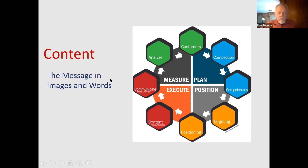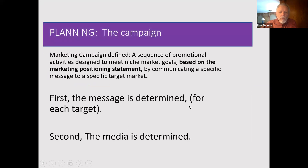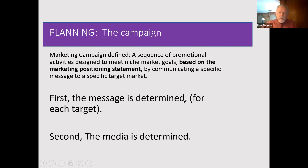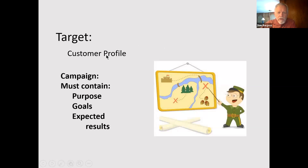Content is probably the hardest to achieve from a creative standpoint. When we plan the campaign, it's been defined — we've got a sequence of promotional activities designed to match the marketing statement, be delivered to the target market, and communicate a specific message. The first thing we do is determine what that message would be based on the marketing positioning statement for each target market. You might have one campaign with two, three, or four different targets.